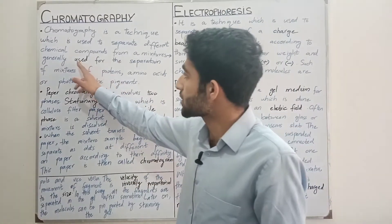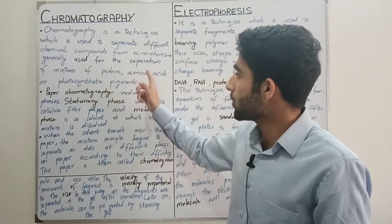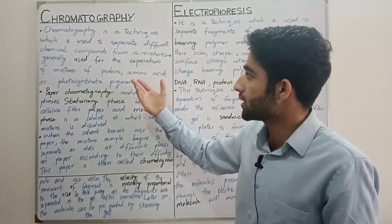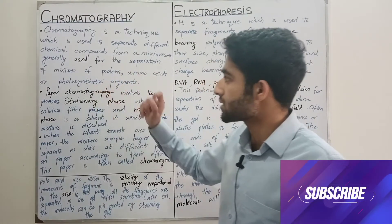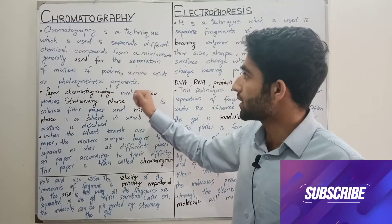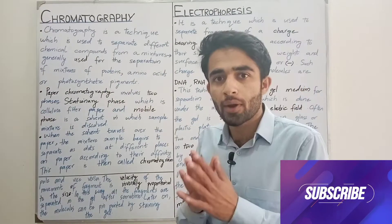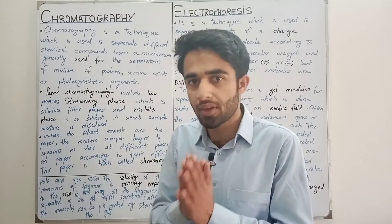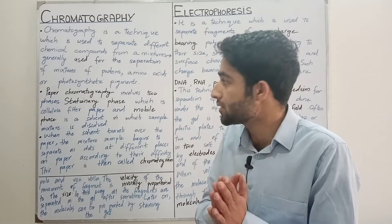Chromatography ko hum generally use karte hain for the separation of mixtures of proteins, amino acids, or photosynthetic pigments. Basically jo proteins, amino acids hain aur jo photosynthetic pigments hain, unke jo mixtures hain, unko separate karne ke liye chromatography ko generally use kiya jata hai. Chromatography ke alag alag types hain, lekin sab se easiest aur common type hai paper chromatography.